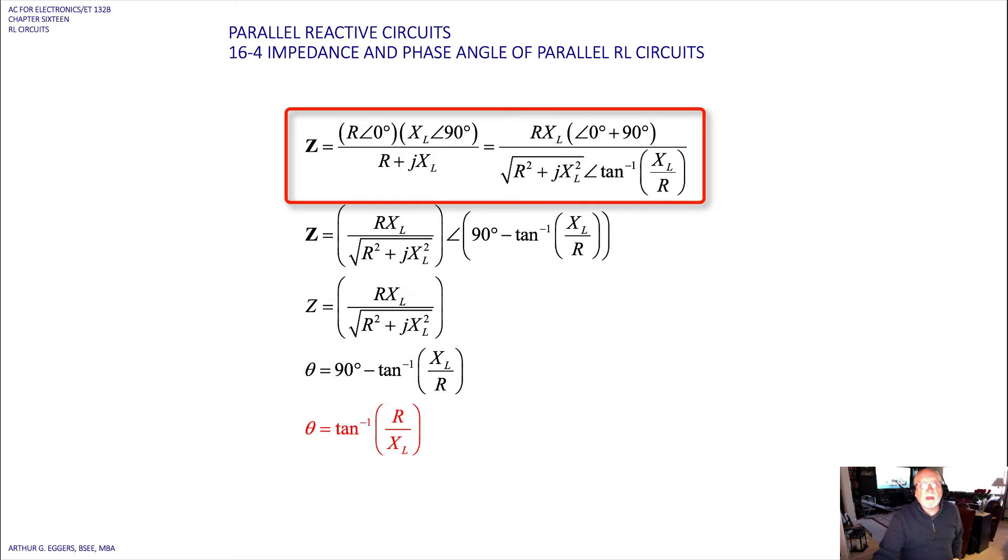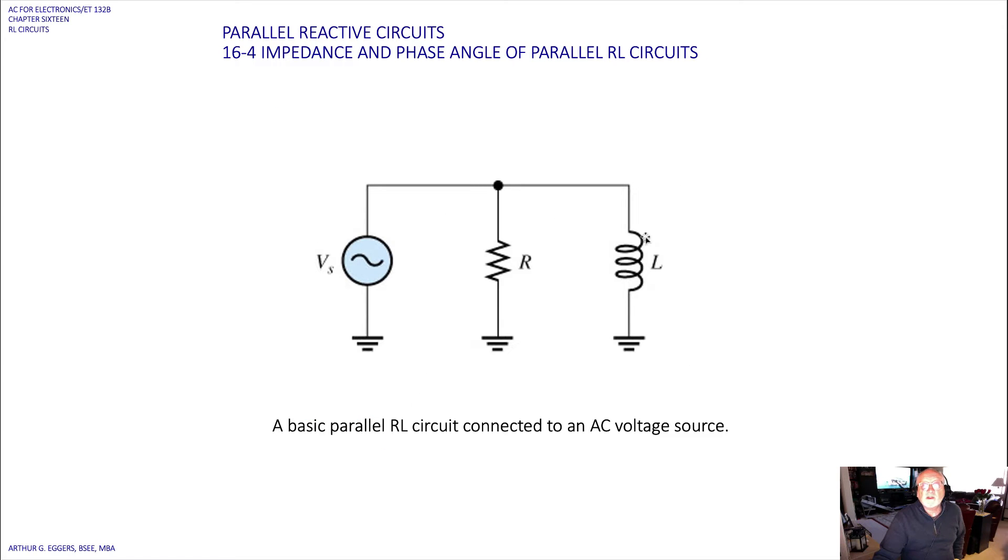So let's take a look at the math. In this we've got some X sub L we need to deal with, we've got some pure resistance to deal with, some source and then a current through both branches.